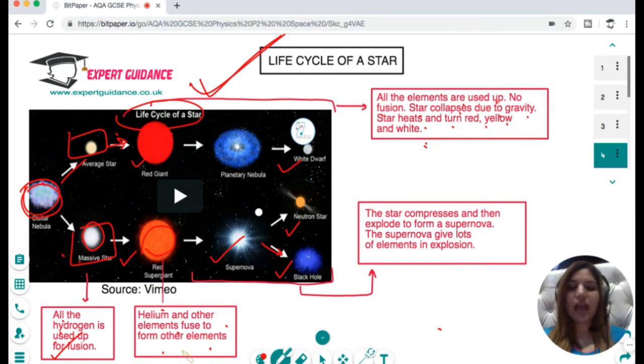If you see in this supergiant, helium and other elements fuse to form other elements. When the star explodes, the star compresses and then explodes to form a supernova, and the supernova gives lots of other elements in the explosion. You should know the difference between the life cycle of a star if it is the size of the sun or greater than the sun.